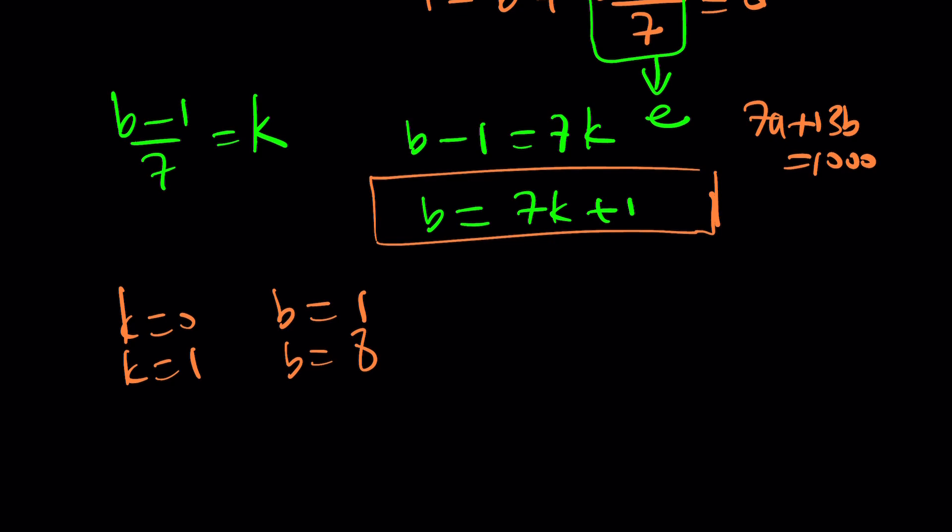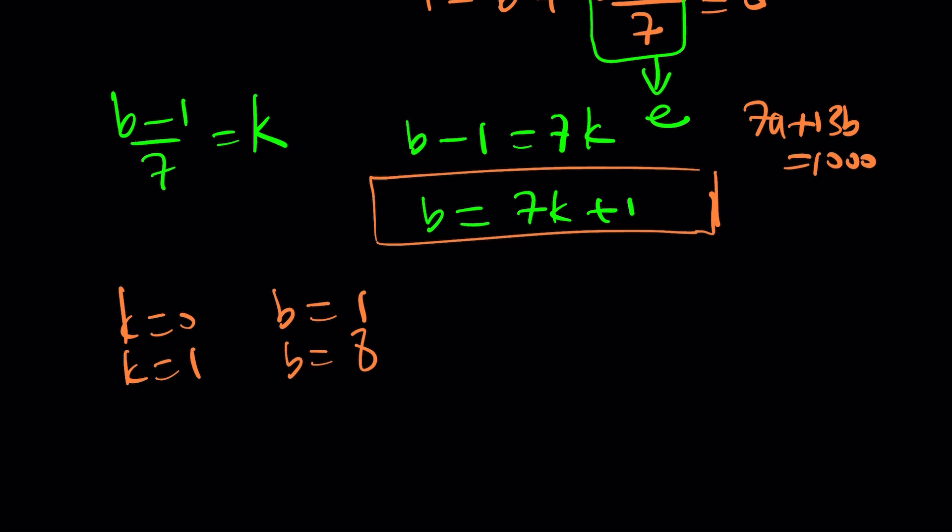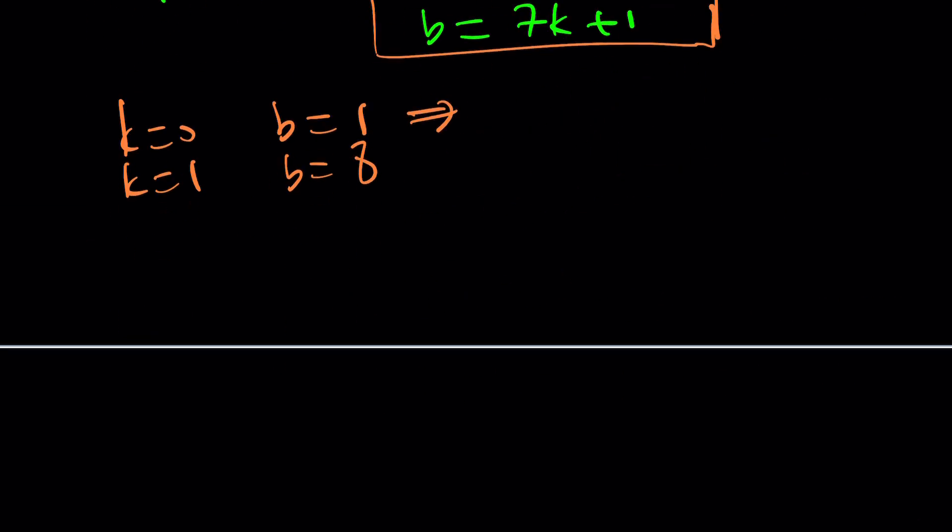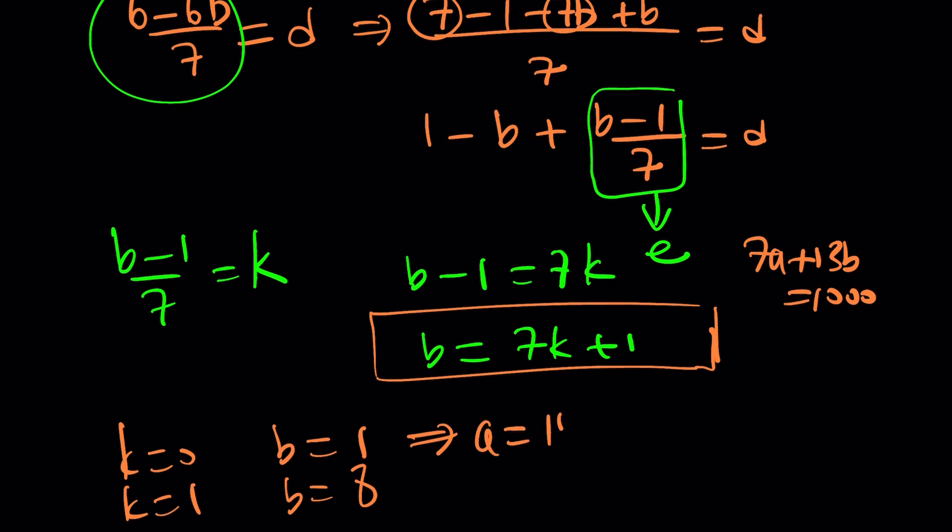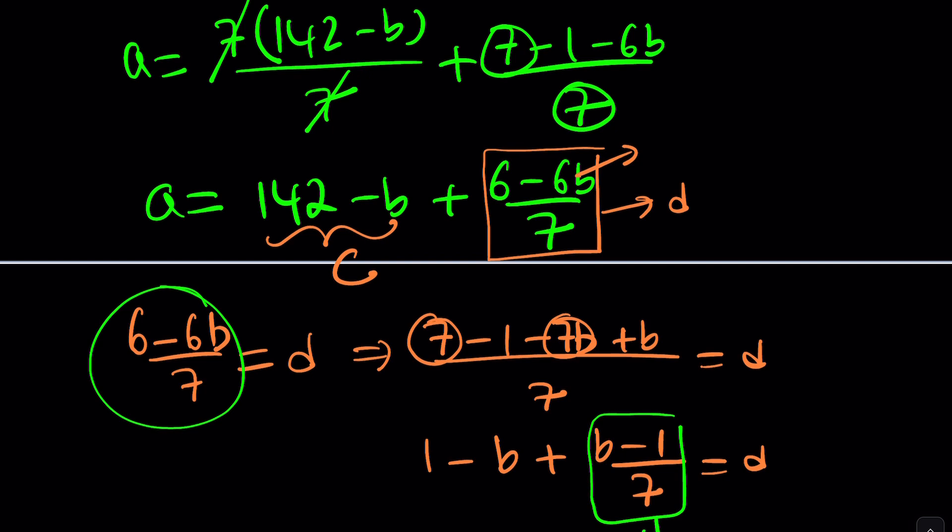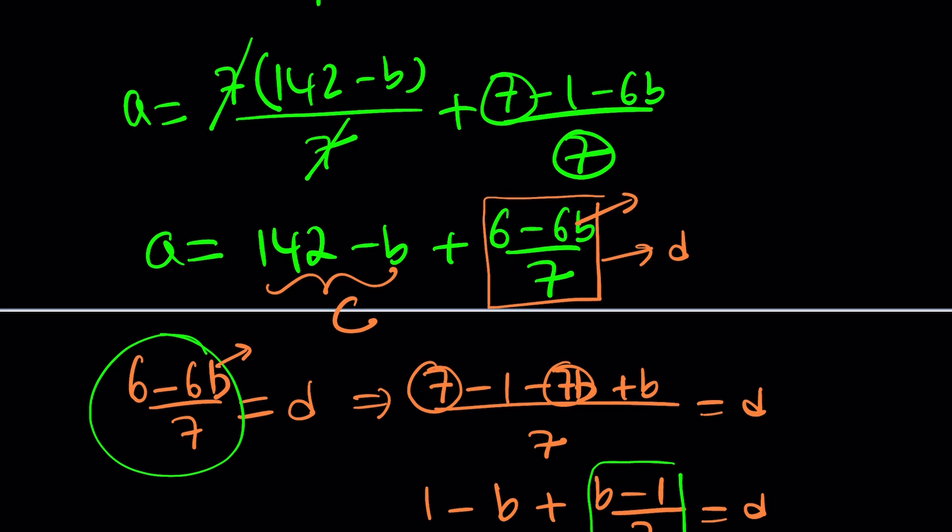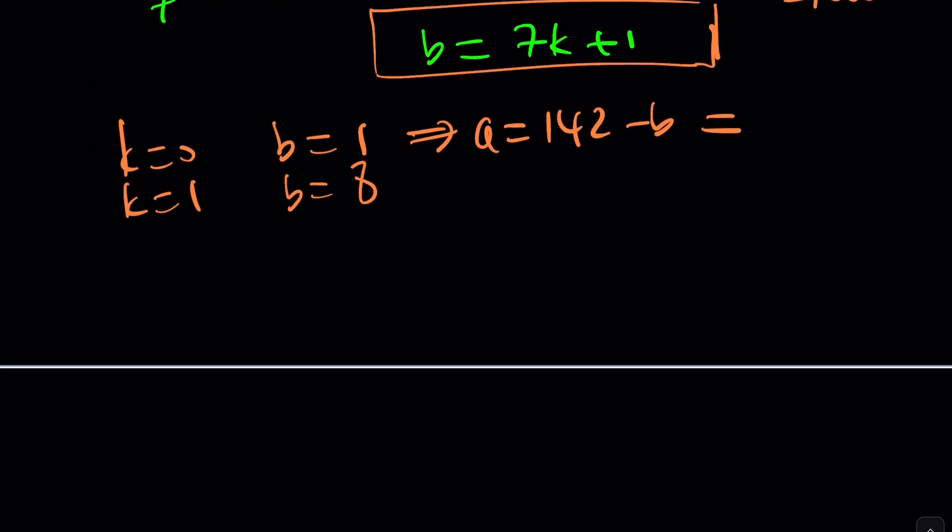By finding the B value, we're finding the A value. But if you want, you can just keep plugging it in. For example, if B equals 1, then D is going to be 0 and A is going to be 142 minus B. So in this case, A is going to be 142 minus B. And since K equals 0, if B equals 1, K equals 0, and D equals 1 minus B. If B equals 1, then D equals 0. If D equals 0, A equals 142 minus B. And if B equals 1, then A is going to be 141.